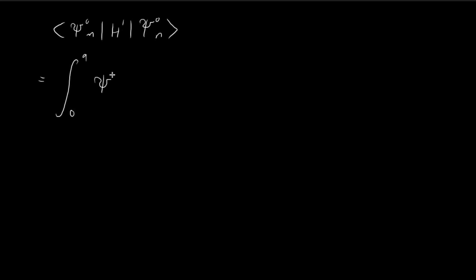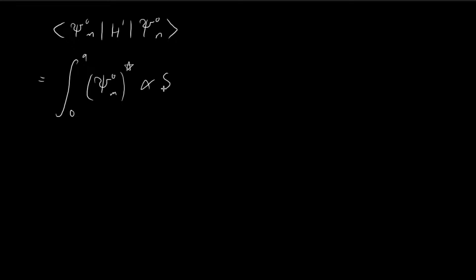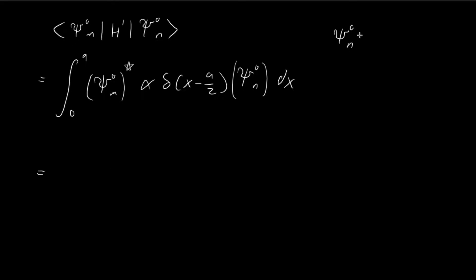We can turn this into an integral. We have the nth stationary state — we take the conjugate — and then we have the perturbation. For problem 6.1, the perturbation is alpha times the Dirac delta function delta(x minus a over 2). And then we also have the mth stationary state, dx. For the nth stationary state of the infinite square well, it is given by the standard expression.